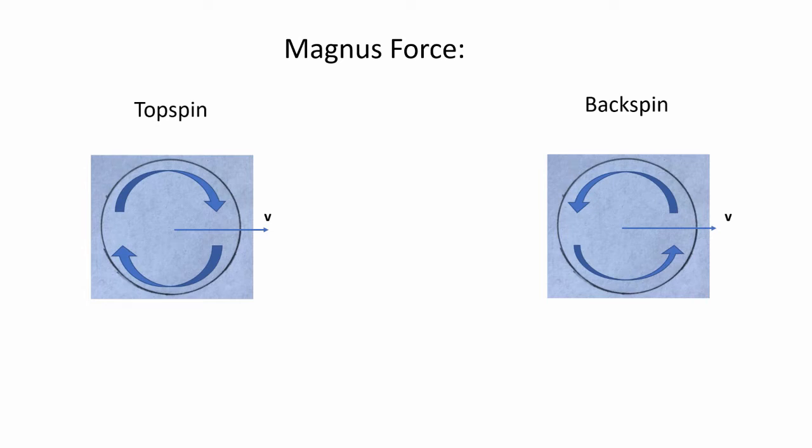This brings us to our third force, Magnus force. Magnus force, F Magnus, is equal to half rho, the density of the air, times A, the middle cross-sectional area of the ball, times V squared, the magnitude of the velocity of the ball squared, times CL, the lift coefficient, times unit vector parallel to the spin axis omega.